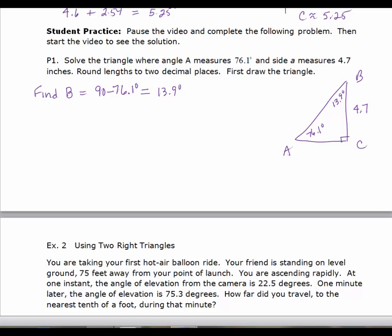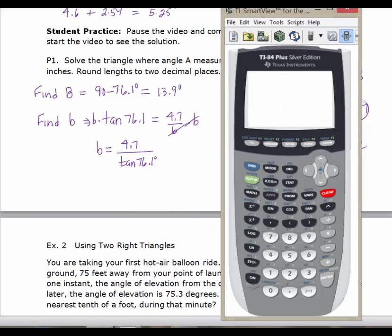Now I want to either find side b or side C. It doesn't matter which one you use, but I do recommend using the given information to find them. To find b I have opposite over adjacent. The tangent of A equals 4.7 over b. I'll multiply both sides by b, the b's will cancel, and then divide both sides by the tangent of 76.1. So b equals 4.7 divided by the tangent of 76.1.